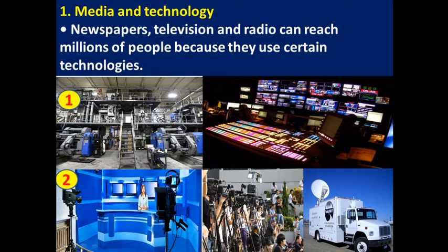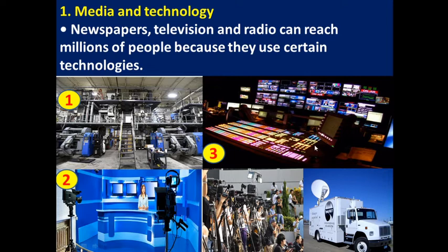The second image shows a television or news studio where different light systems, technologies, and cameras are used to telecast or broadcast channels and news. The third image is about the control room where they control televisions and live programs using lots of sound systems and related technologies. The fourth image shows media professionals carrying different mic systems to capture news happening around the world.